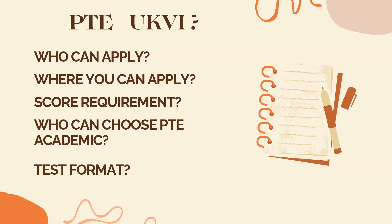Schooling means below degree level — don't get confused. This is called the Tier 4 General Student Visa. Number two: if you want to apply for a Skilled Work Visa, known as Tier 2 General Work Visa, Startup Visa, Innovator Visa, or Ministry of Religion Visa — meaning Tier 2 — only then you should take this UKVI test.